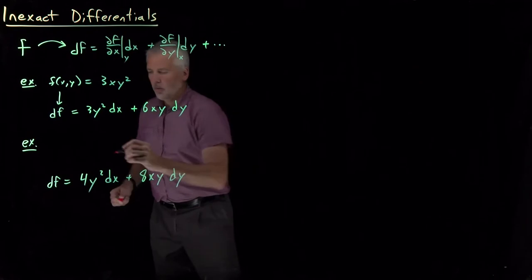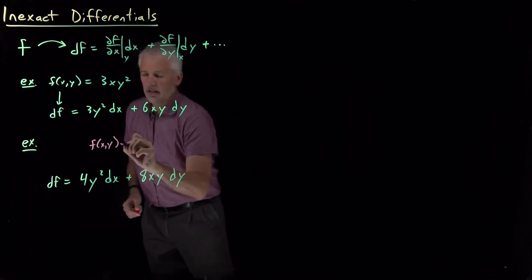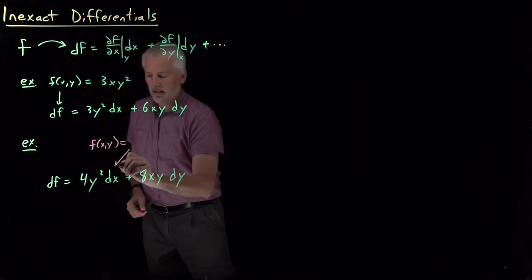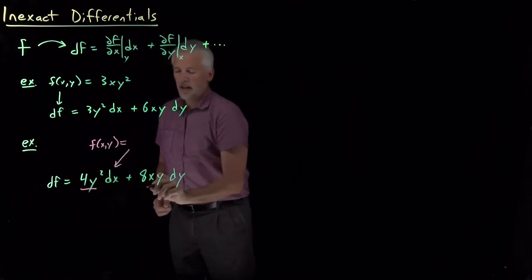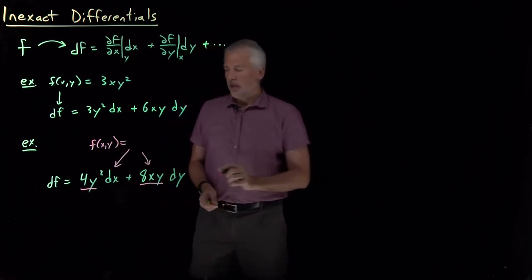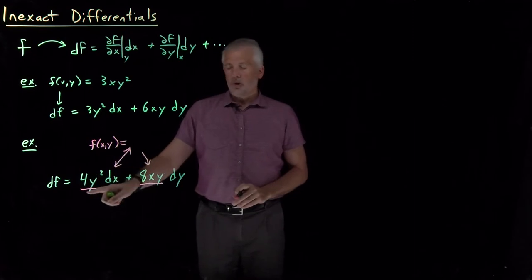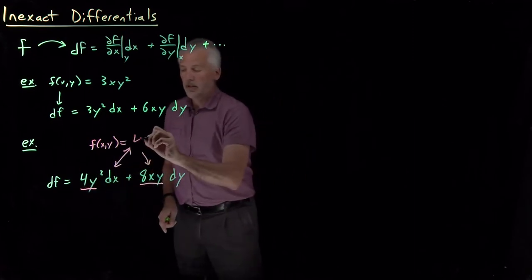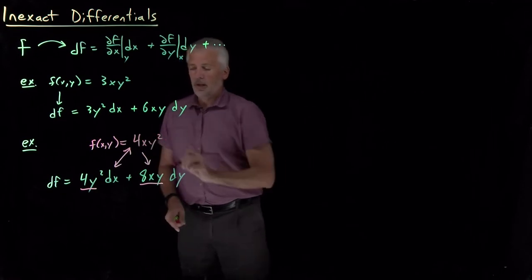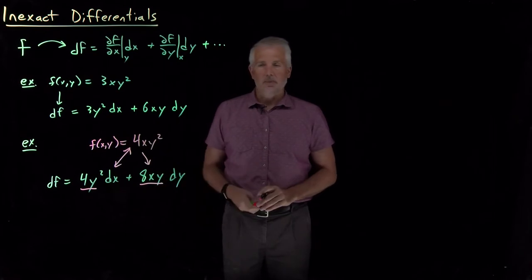We can say, what would this function f(x,y) have to be so that its x derivative looks like this term, and its y derivative looks like this term? So we need to think about that in the opposite direction. What function has a partial derivative with respect to x that looks like 4y²? Well, that must be 4xy², because if I take the partial derivative with respect to x, the x disappears and leaves me with just 4y².